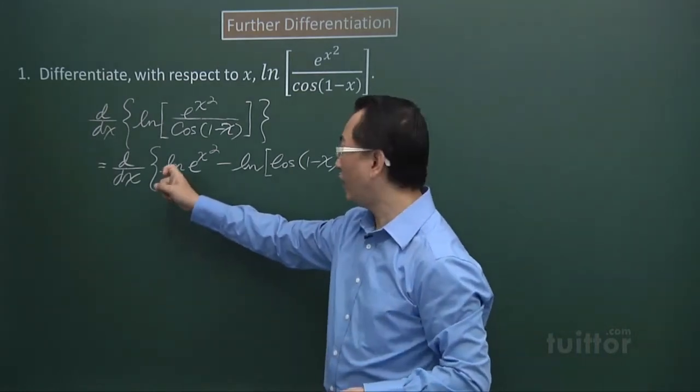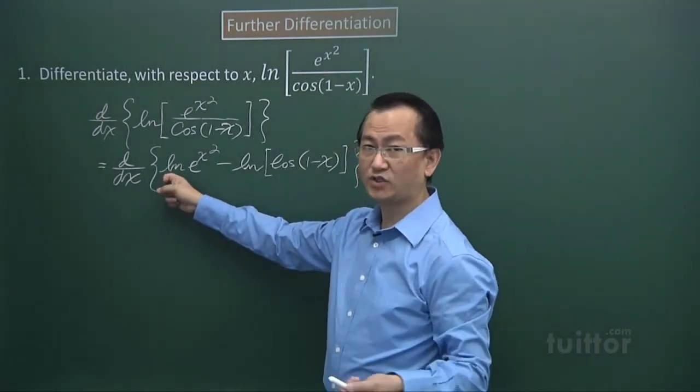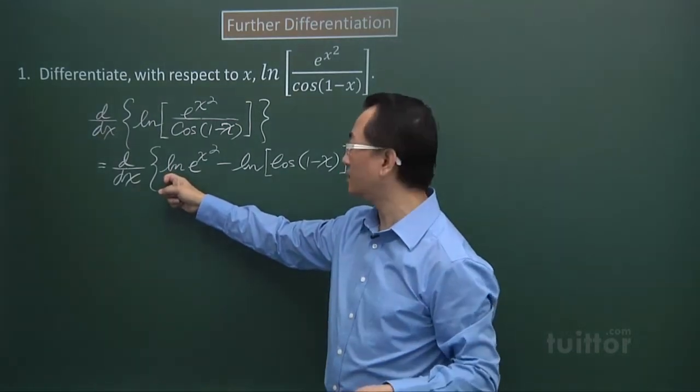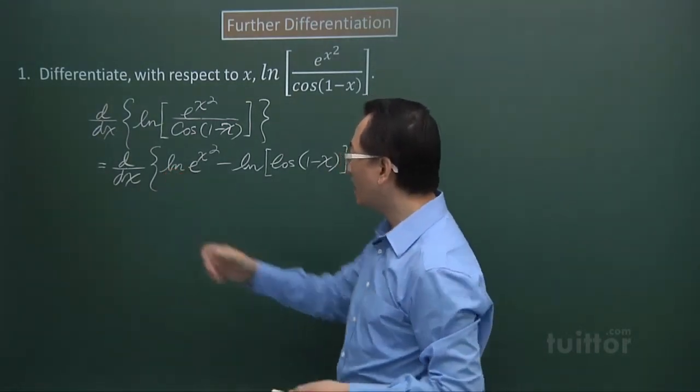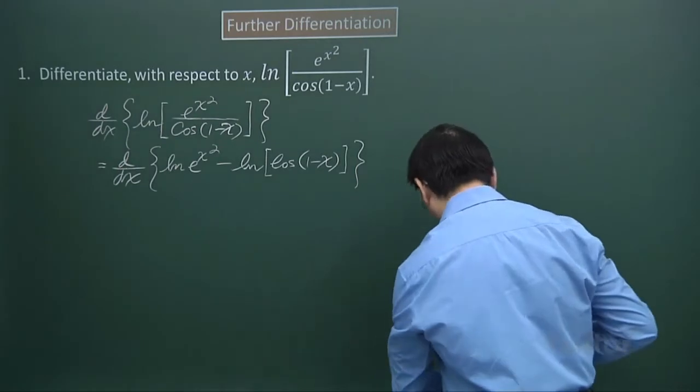Where we have ln, we actually have ln base e. So ln base e of e will give you 1.